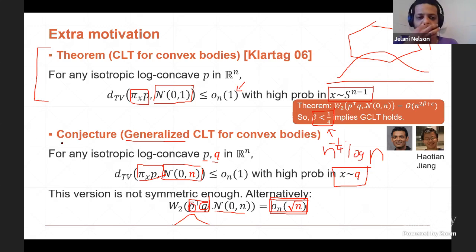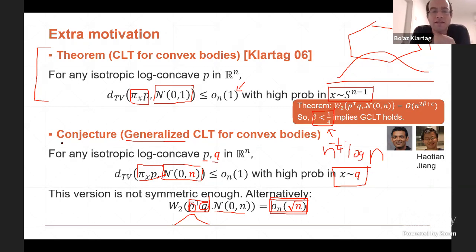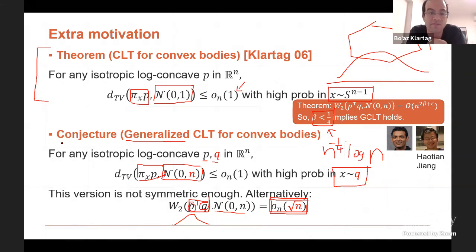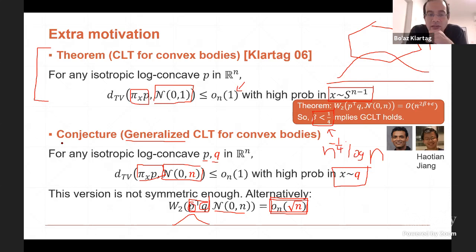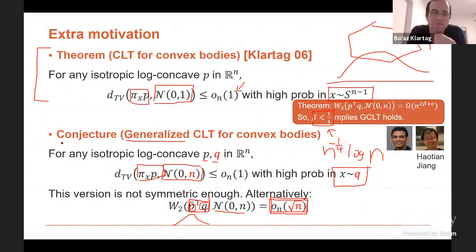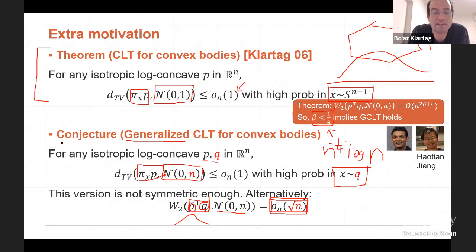In the generalized conjecture, do you know if ⟨p, q⟩ is close to some even distribution, not just Gaussian? I never thought about that question. I worry that evenness would also imply back to improving KLS. Even getting evenness is already a hard problem — it implies improving KLS. That was my impression: just getting it even is already a problem.